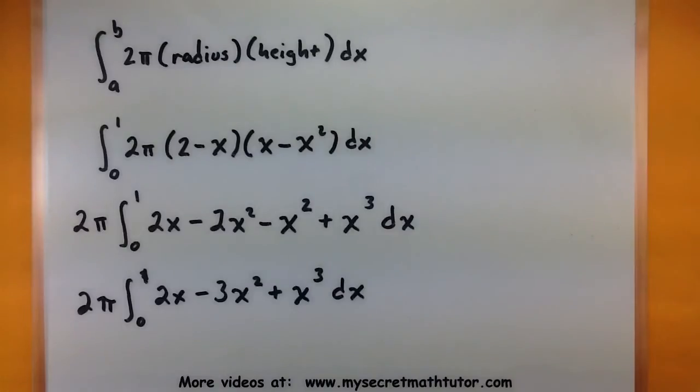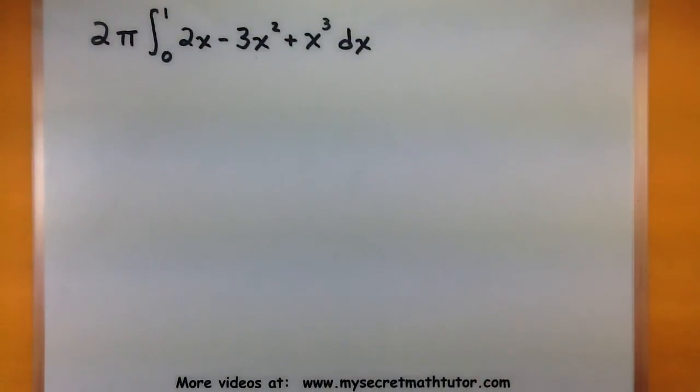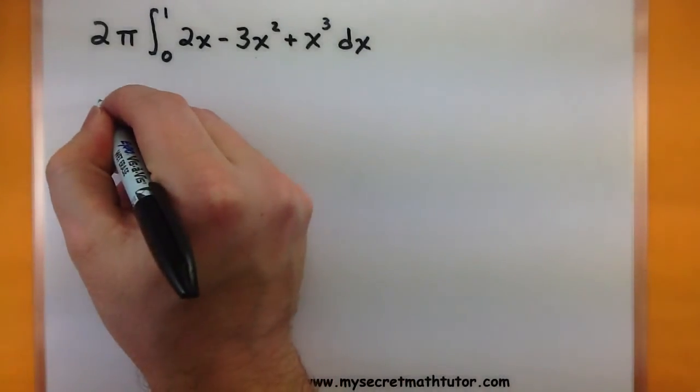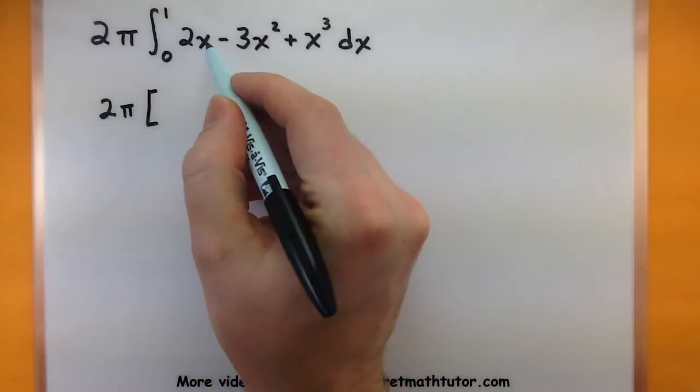Alright. Looks like now we're ready to take the antiderivative. Let's start with this and do just that. So for our antiderivative, we'll add 1 to the powers of these and divide by that new power.